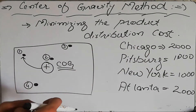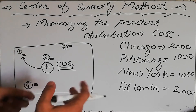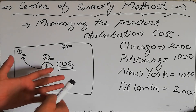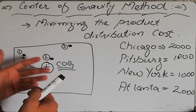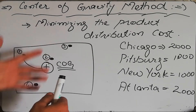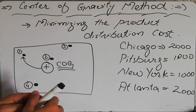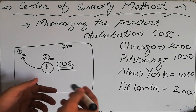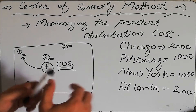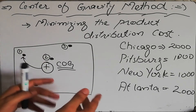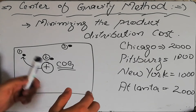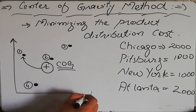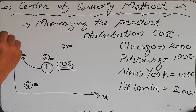We are trying to find the location where we should place our warehouse or storage facility so that the distribution cost between these markets is minimum. The second thing we need to know — after the number of products sent to each market — is the location of each market on the x and y axis. Let's plot them: this is the x axis and this is the y axis.